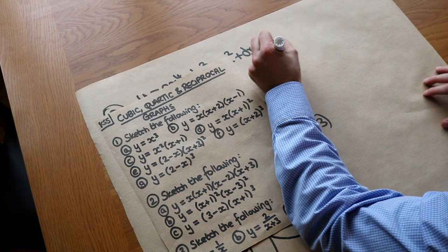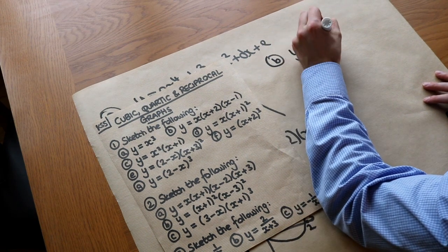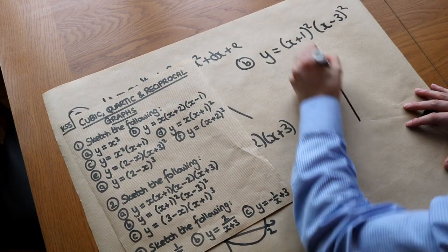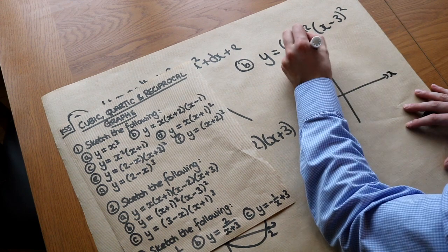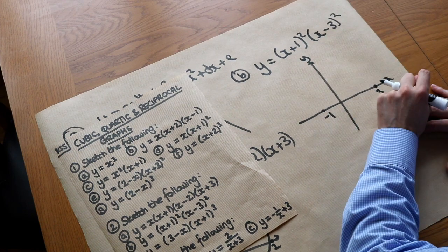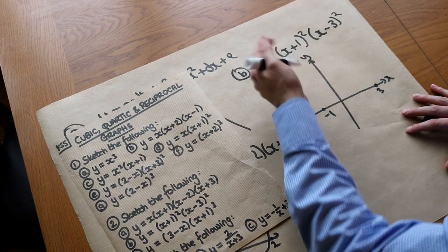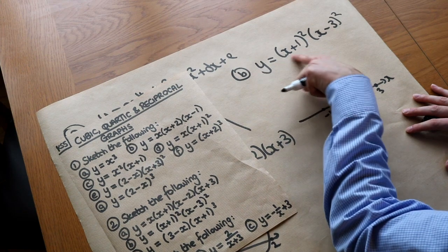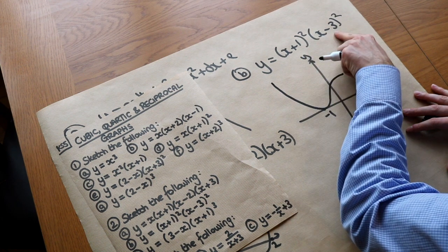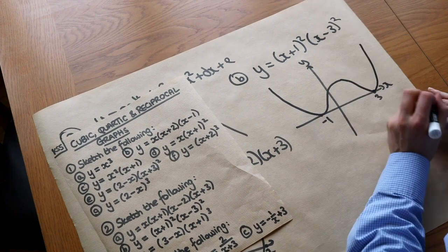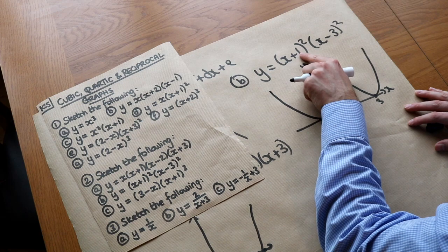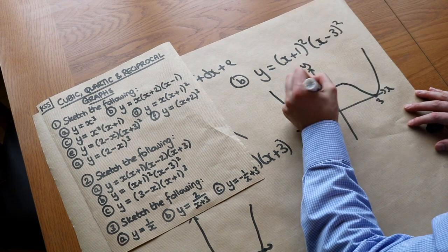What about y equals (x+1)²(x-3)²? There are repeated factors, so there will be some touching of the x-axis. We have a root at minus 1 and a root at 3, and it's a positive quartic. Because both are repeated factors, the curve touches minus 1 and touches 3, coming back up like this. The y-intercept: if x equals 0, we get 1² times (−3)², which is 9.